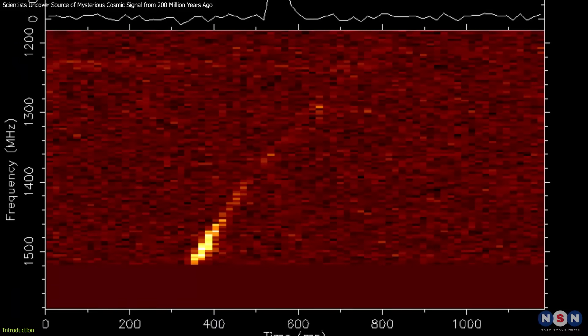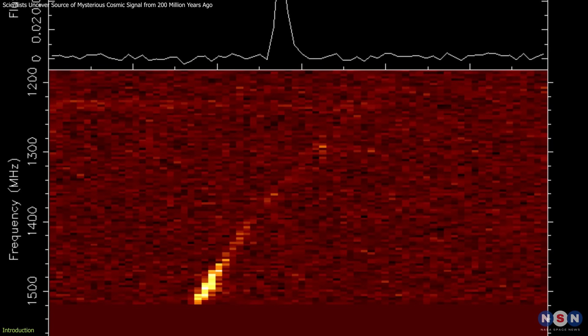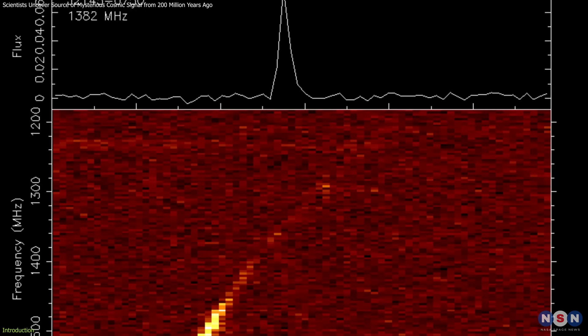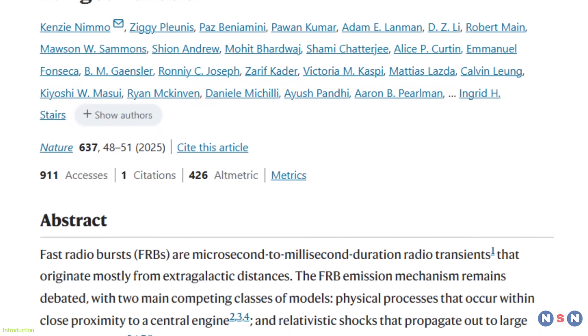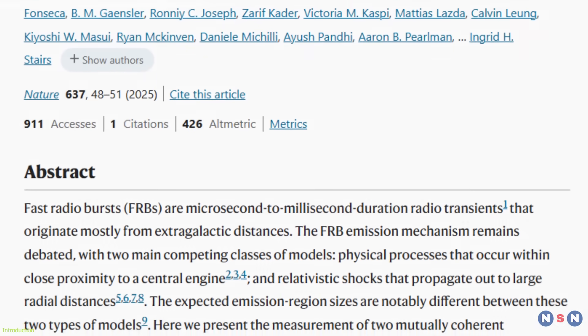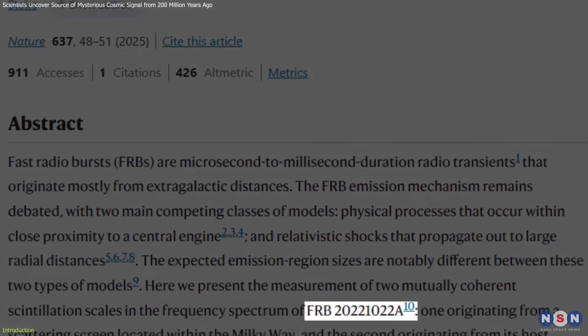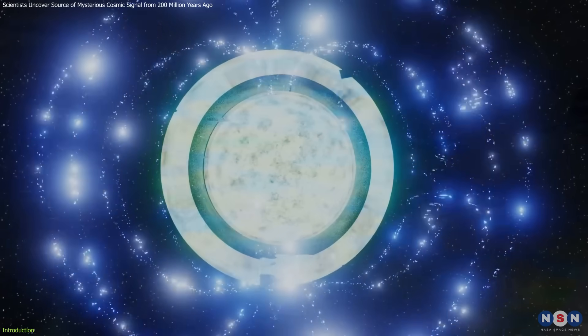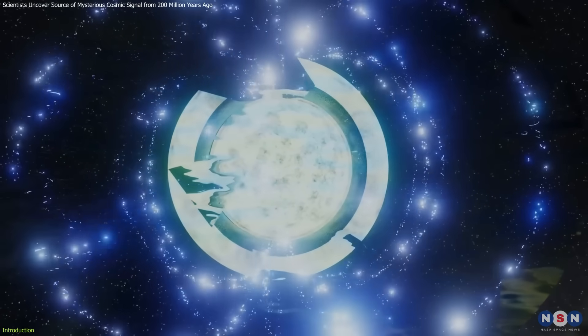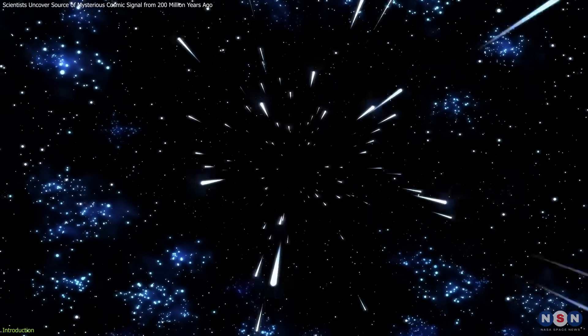While FRBs are fleeting, their impact on our understanding of the universe is anything but. Recently, a team of researchers traced one such burst, FRB 20221022A, to its origin, a neutron star's magnetosphere, 200 million light-years away.